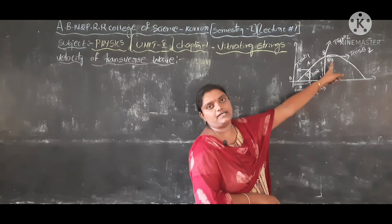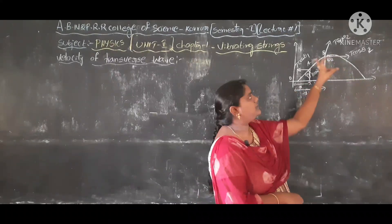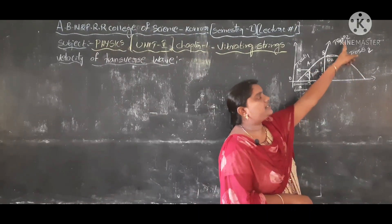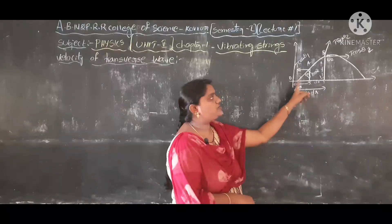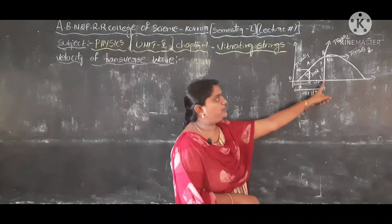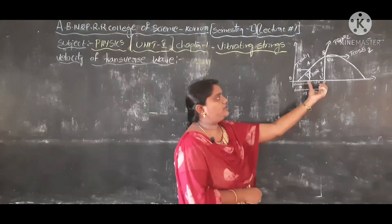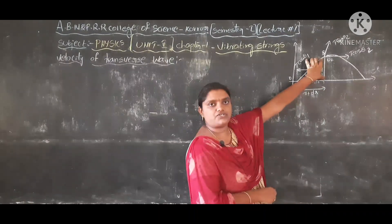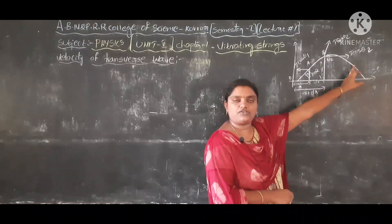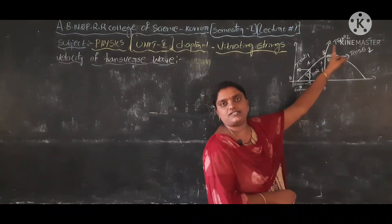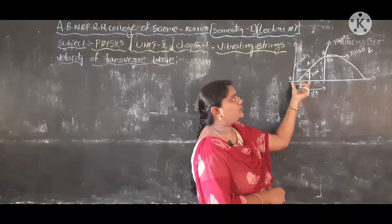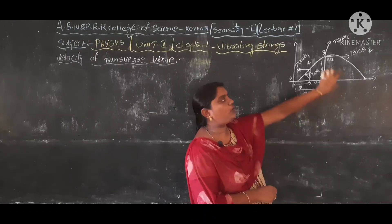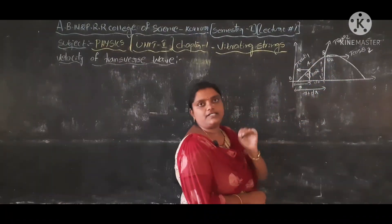Here θ₁ and θ₂ are the angles made by the tension to the string. The horizontal components are T cosθ₁ and T cosθ₂, and the vertical components are T sinθ₁ and T sinθ₂. The distance from the horizontal to point A is x, and to point B is x + dx.